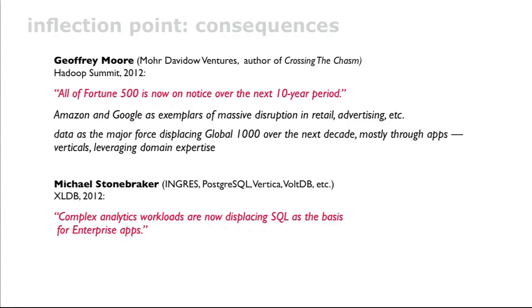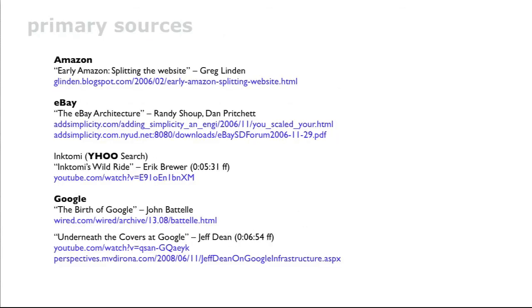Similarly, Michael Stonebreaker, I was at a conference with him a couple months ago, and he's not the world's biggest fan of the term big data, but he is responsible for a lot of very interesting work with SQL over the years. And his view is that now complex analytics, these kind of workloads are displacing SQL as the real basis for enterprise apps. I usually get asked for primary sources about this. So as far as Amazon, eBay, Eric Brewer from Yahoo, Jeff Dean from Google, there's some really great stories. They're written or spoken by the actual tech leads on those teams. So they give a lot of insight to that inflection point in 97, and what happened in the few years that followed.